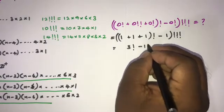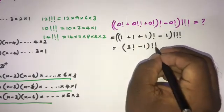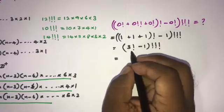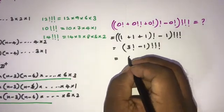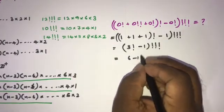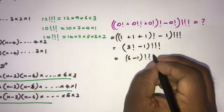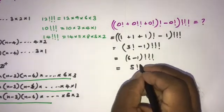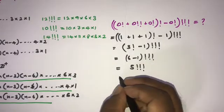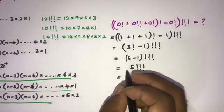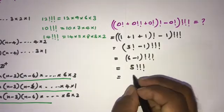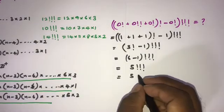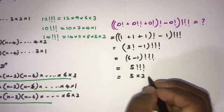So we have 3 factorial minus 1 triple factorial. We know 3 factorial equals 6, so 6 minus 1 triple factorial equals 5 triple factorial. Now 5 = 3 × 1 + 2, so 5 triple factorial equals 5 times 2, which equals 10.